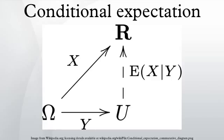History: The related concept of conditional probability dates back at least to Laplace, who calculated conditional distributions. It was Andrei Kolmogorov who in 1933 formalized it using the Radon-Nikodym theorem. In works of Paul Halmos and Joseph L. Doob from 1953, conditional expectation was generalized to its modern definition using sub-sigma algebras.